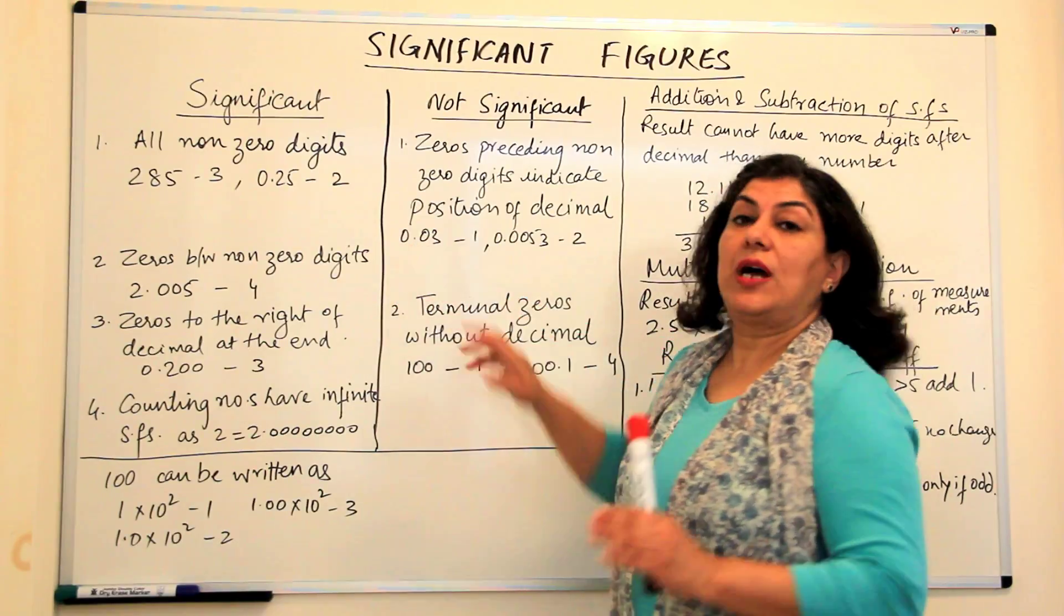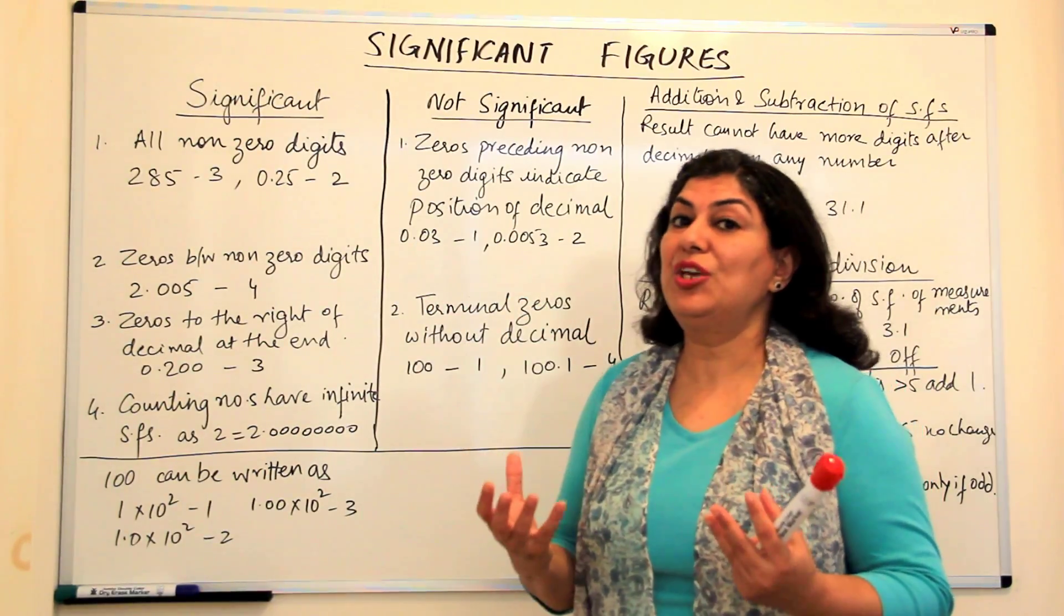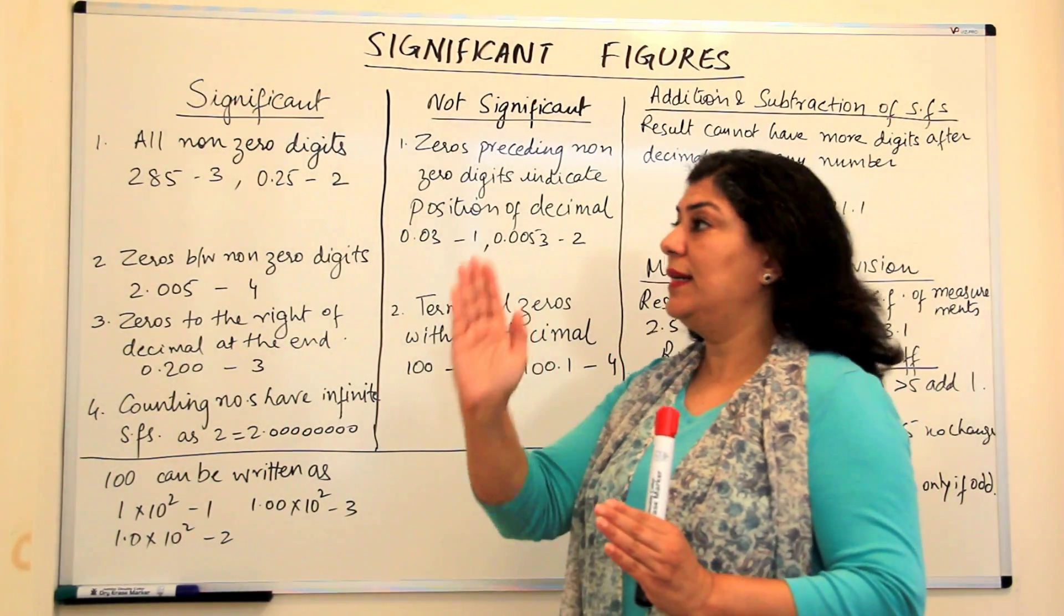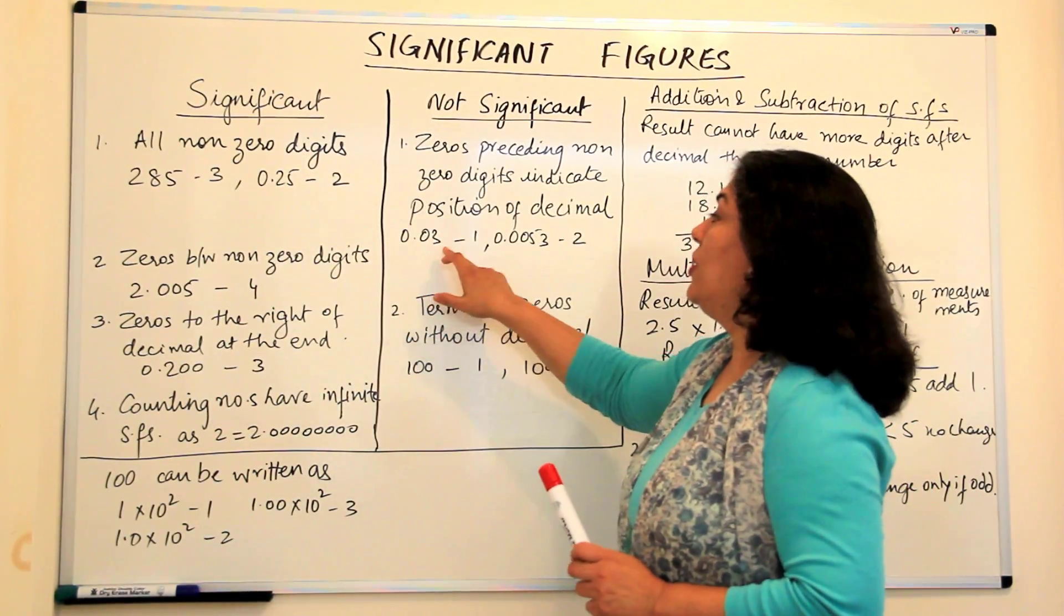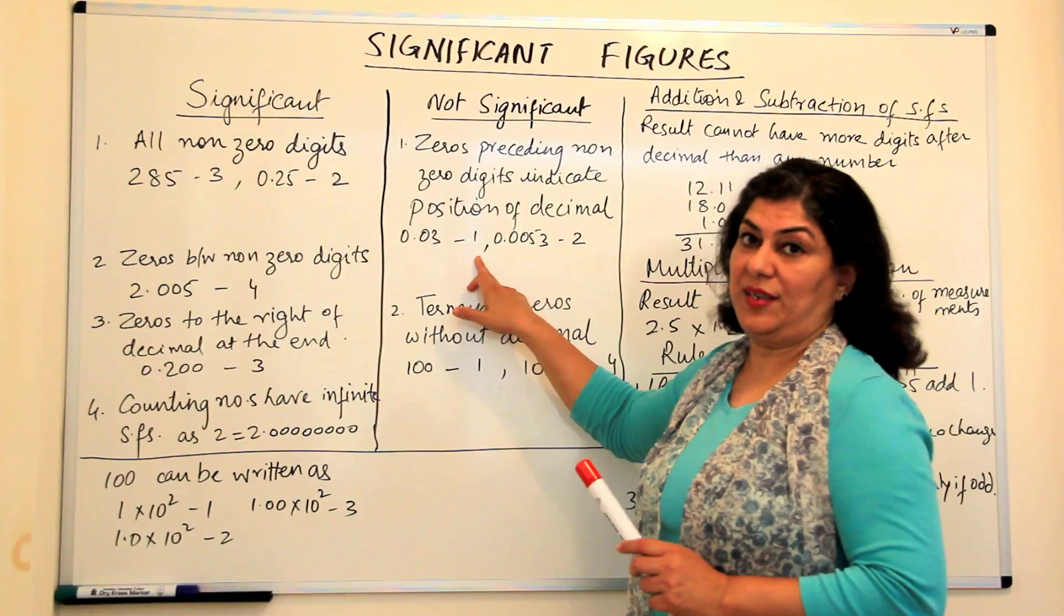So these zeros are not significant because they are not giving you a certain value. They are only telling you that the reading should fall at this place. Therefore, this reading has only one significant figure.